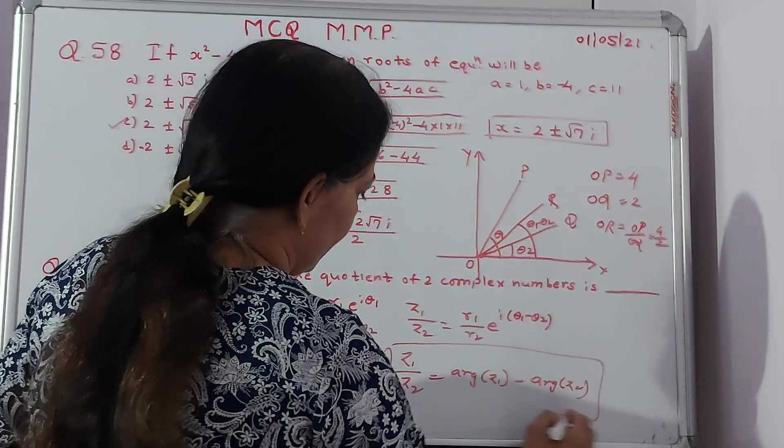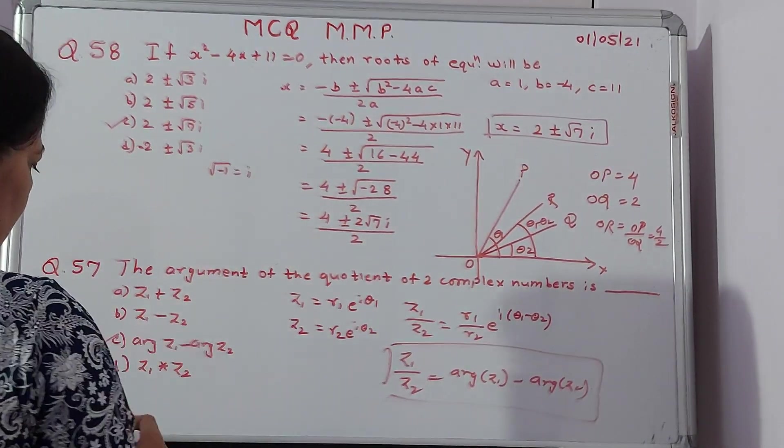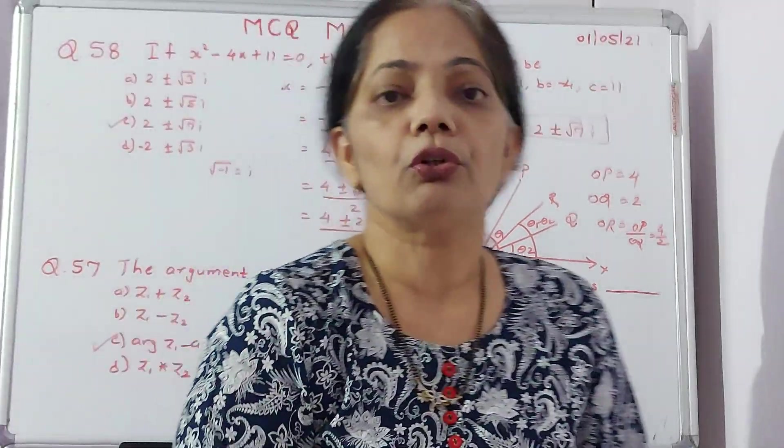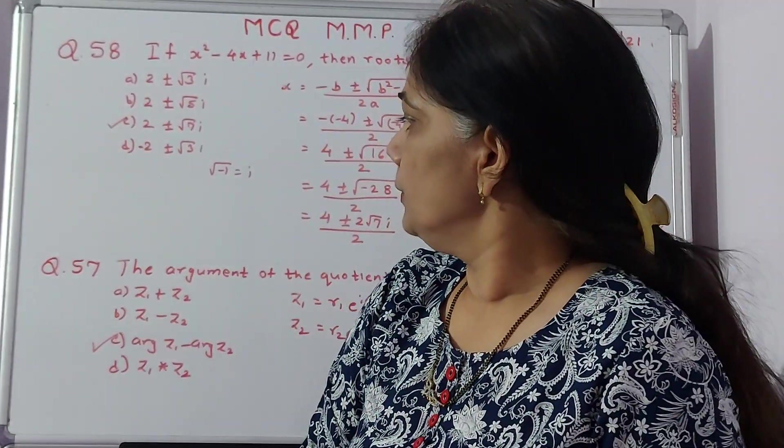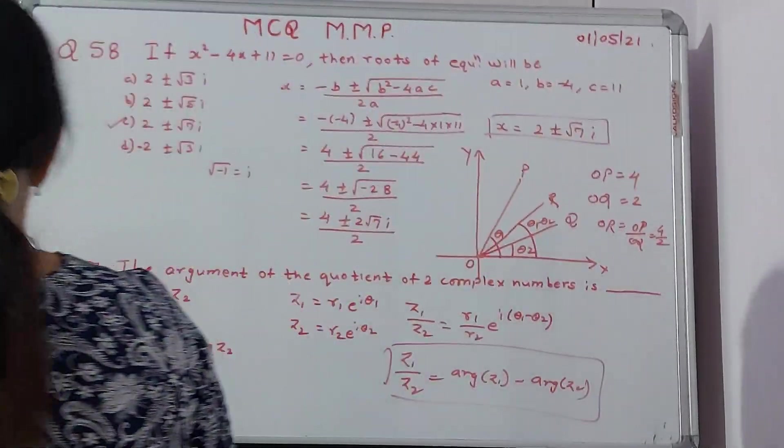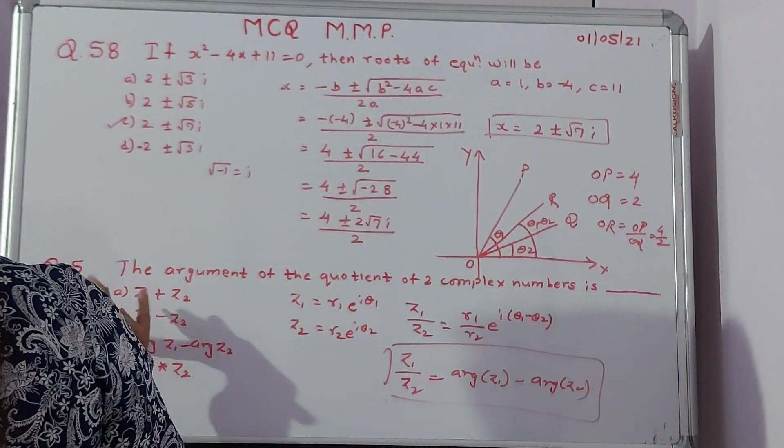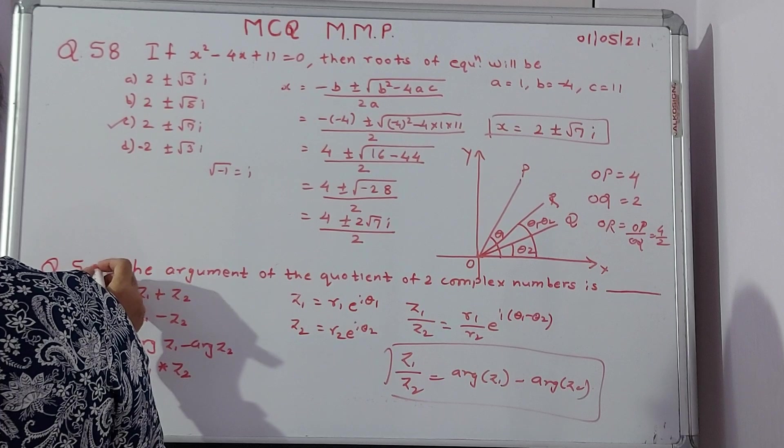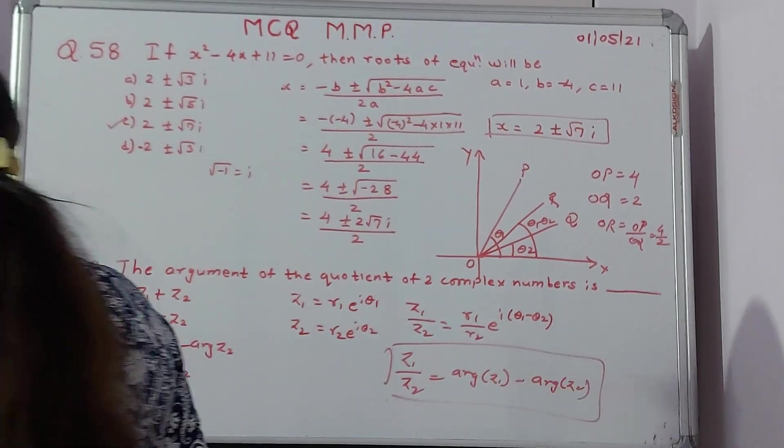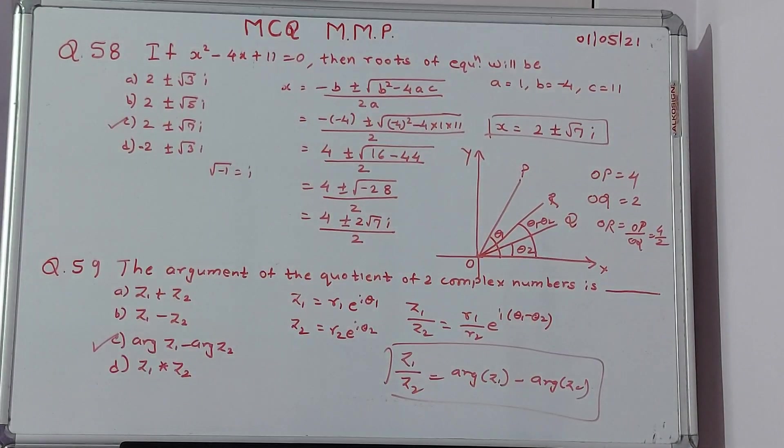But the answer over here which you want to write, you can say the quotient will be given by Z1 minus Z2 equals arg Z1 minus arg Z2. This is the way you can get the correct answer. So answer over here is C. We move towards question number 60.